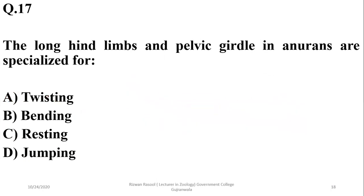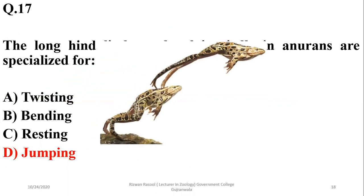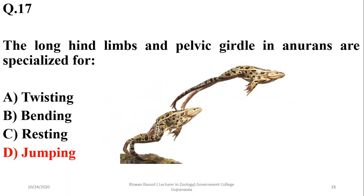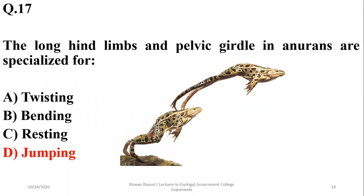The long hind limbs and pelvic girdle in anurans are specialized for jumping. In frogs, they use their hind limbs for jumping.